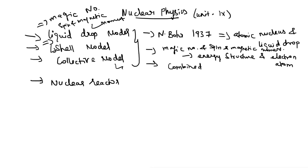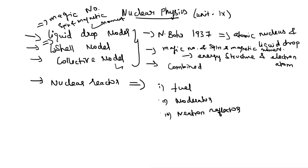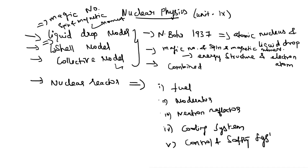Some important points from the previous classes. After that, we discussed the nuclear reactor. There are five main components: first one is fuel or fissionable material; second one is moderator; third one is neutron reflector; fourth one is cooling system; fifth one is control and safety system. These are all the topics discussed in the previous classes.